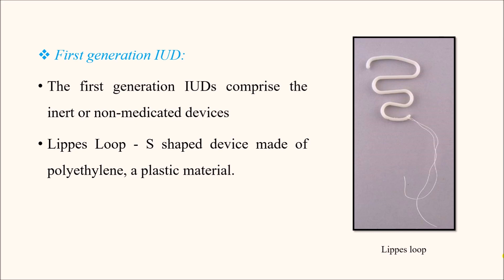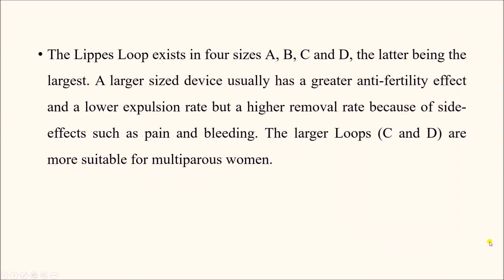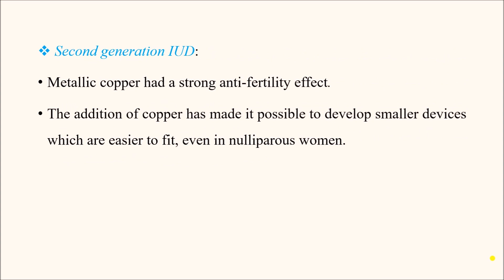First generation IUDs comprise inert or non-medicated devices. The Lippes Loop is the most commonly used first generation IUD — it is an S-shaped device made of polyethylene. As you can see, this is an S-shaped tortuous structure, and these are the tails of the IUD. It exists in four different sizes: A, B, C, and D — D being the largest and A being the smallest. Larger size devices have a greater anti-fertility effect and lower expulsion rate, but a higher removal rate due to side effects like pain and bleeding. Larger loops, sizes C and D, are more suitable for multiparous women where the uterine cavity is large.